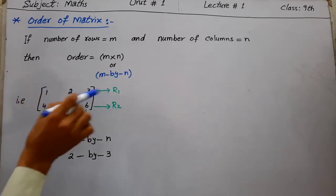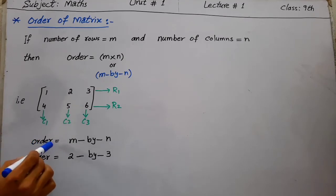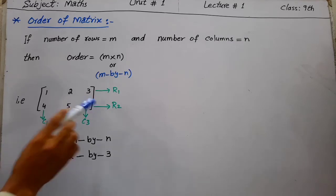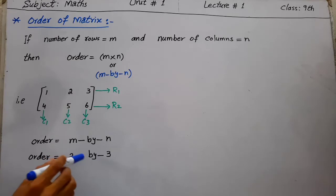For example, this matrix [1 2 3; 4 5 6] has row number one: 1, 2, 3 and row number two: 4, 5, 6. It has three columns: column one is 1, 4; column two is 2, 5; column three is 3, 6. So the number of rows is 2 and number of columns is 3, giving order 2 by 3.